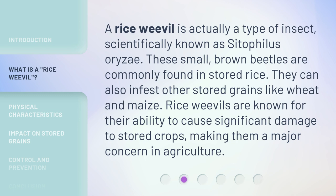A rice weevil is actually a type of insect, scientifically known as Cytophilus oryzae. These small, brown beetles are commonly found in stored rice. They can also infest other stored grains like wheat and maize. Rice weevils are known for their ability to cause significant damage to stored crops, making them a major concern in agriculture.